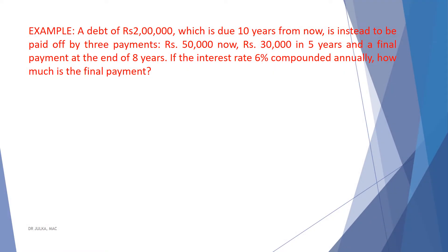Example 1: A debt of Rs. 2,00,000 which is due in 10 years from now is intended to be paid off by 3 payments — Rs. 50,000 now, Rs. 30,000 in 5 years, and a final payment at the end of 8 years. If the interest rate is 6% compounded annually, how much is the final payment?